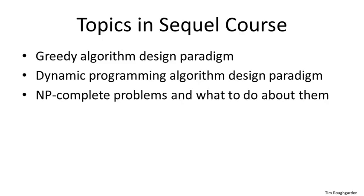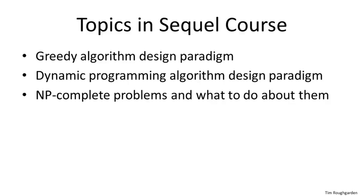The second part of the sequel course concerns NP-complete problems and what to do about them. NP-complete problems are problems that, assuming the famous P not equal to NP conjecture, cannot be solved by any computationally efficient algorithm. We'll discuss the theory of NP-completeness with a focus on what it means for you as an algorithm designer. We'll also talk about several ways to approach NP-complete problems, including fast algorithms for special cases, fast heuristics with provable performance guarantees, and exponential time algorithms qualitatively faster than brute force search.